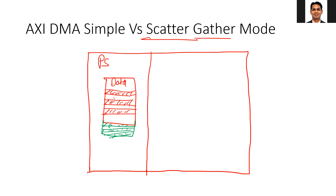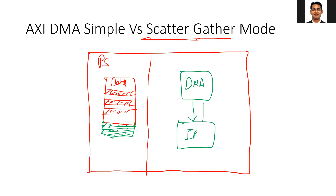What we want is for the DMA to read the first data and send it to the IP via the MM2S interface, then read the second data, the third data, and store the processed versions back using the S2MM transfer. So I want the DMA to process multiple packets. In that case, I don't want to configure the DMA every time for every simple transfer — these would be six simple transfers — so I would need to configure the DMA six times via AXI Lite, which would be very time-consuming.